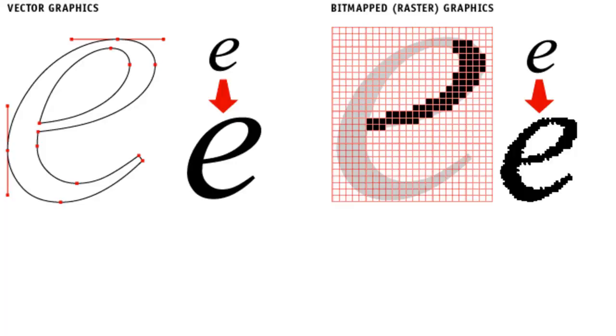If it's losing quality when increasing or decreasing the size of the photo, it is raster-based. If it is not losing quality, it is vector-based.